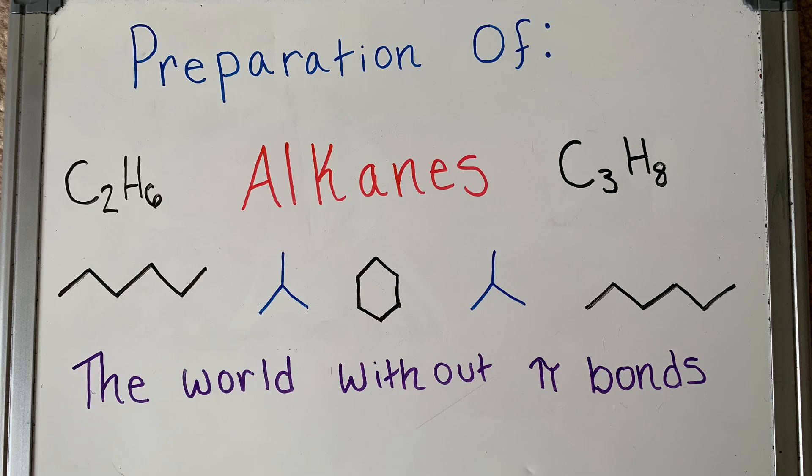Hi guys, I am back with another installment in the preparation series, and today we are going to be discussing how to prepare the very first functional group you learn about. It consists of only carbons, only hydrogens, and there will not be a pi bond anywhere in sight. That's right, we're talking about alkanes.